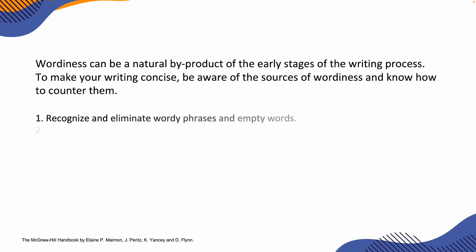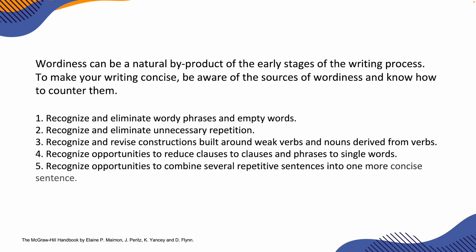Wordiness can be a natural byproduct of the early stages of the writing process. To make your writing concise, be aware of the sources of wordiness and know how to counter them. Recognize and eliminate wordy phrases and empty words. Recognize and eliminate unnecessary repetition. Recognize and revise constructions built around weak verbs and nouns derived from verbs. Recognize opportunities to reduce clauses to phrases and phrases to single words. Recognize opportunities to combine several repetitive sentences into one more concise sentence.